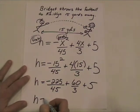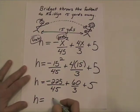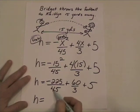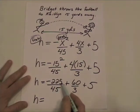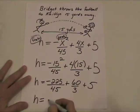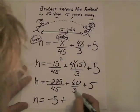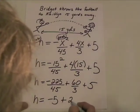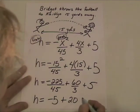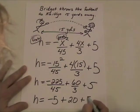The height is going to be equal to — 45 will go into 225 exactly 5 times — so that's negative 5, plus 60 divided by 3 is 20, plus 5.